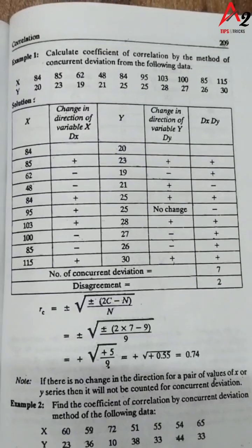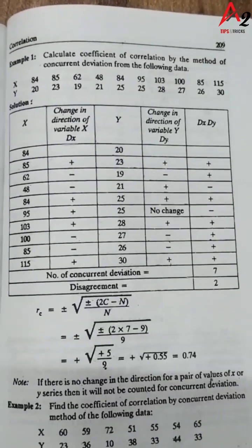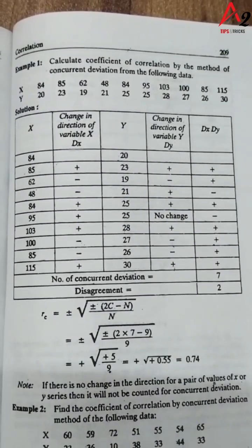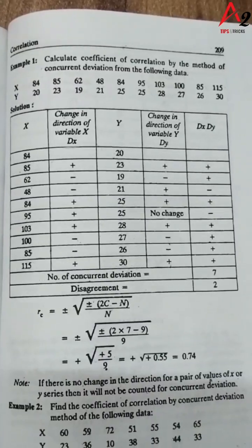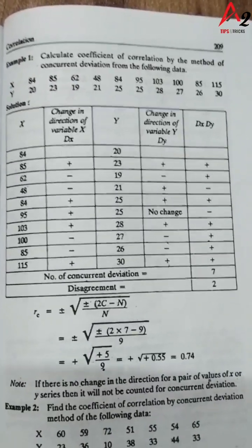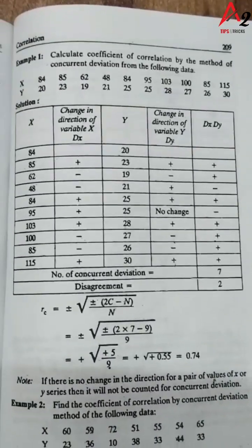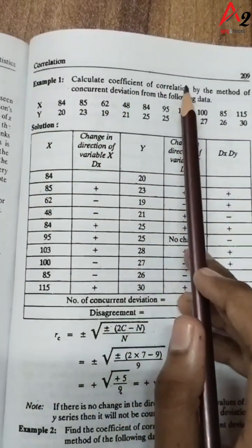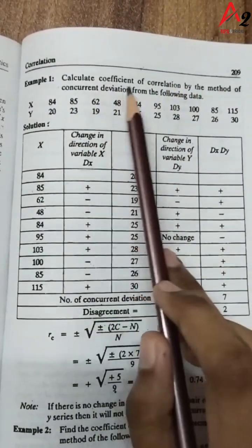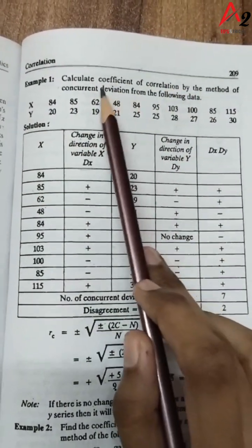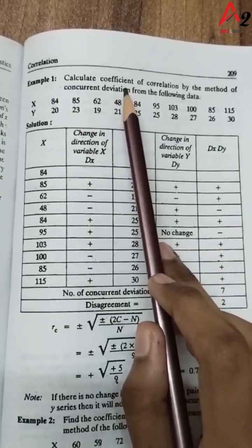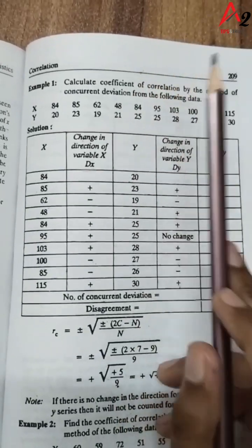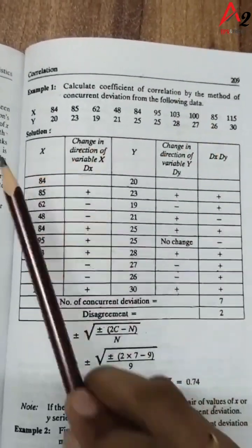Hello guys, welcome to A2 Tips and Tricks YouTube channel. In this video, let's talk about concurrent deviations and calculate the coefficient of correlation by the method of concurrent deviations. Concurrent deviations are only positive and negative values.